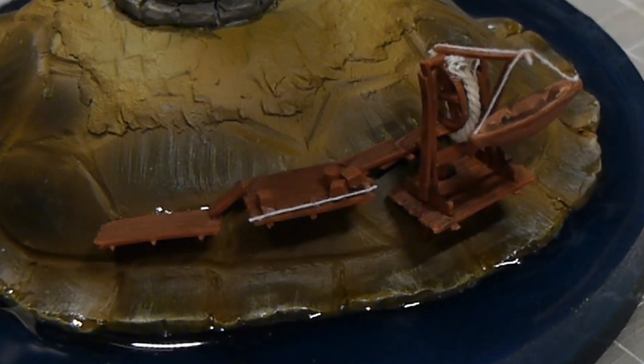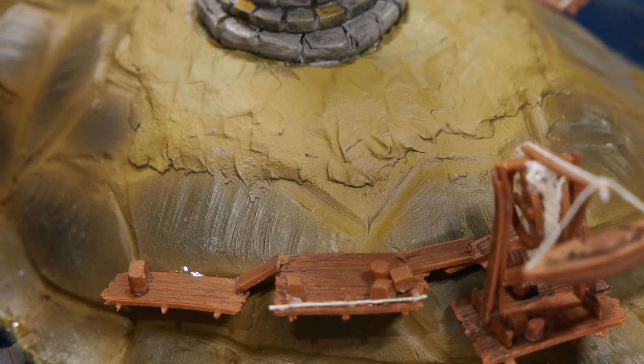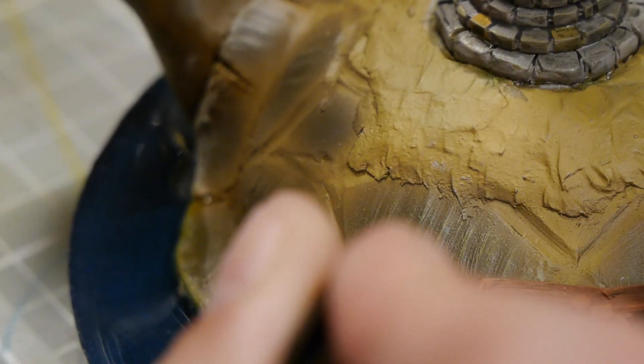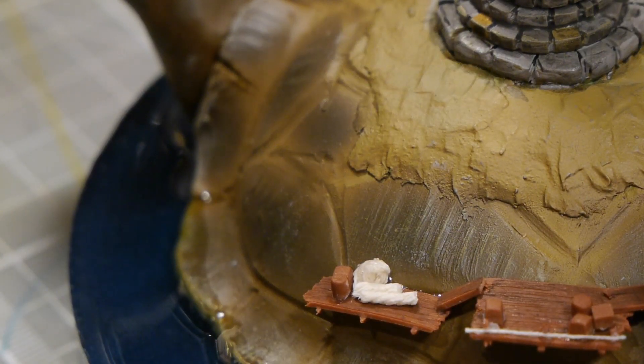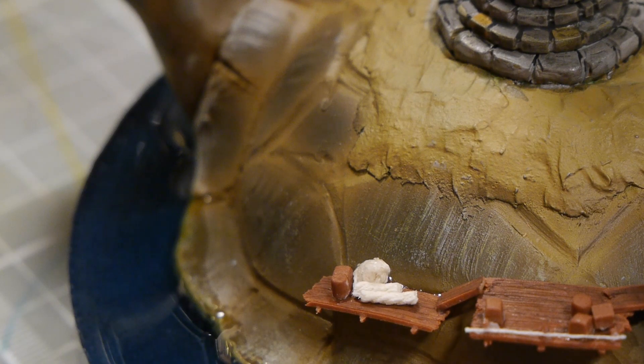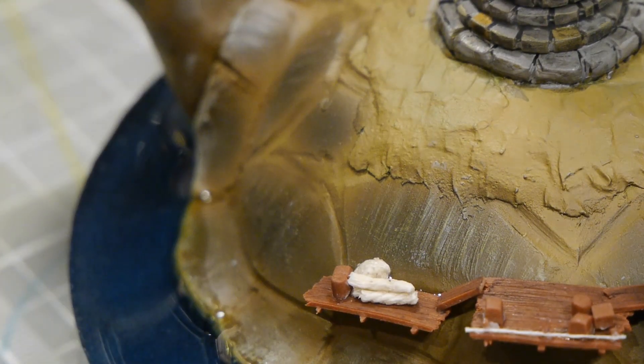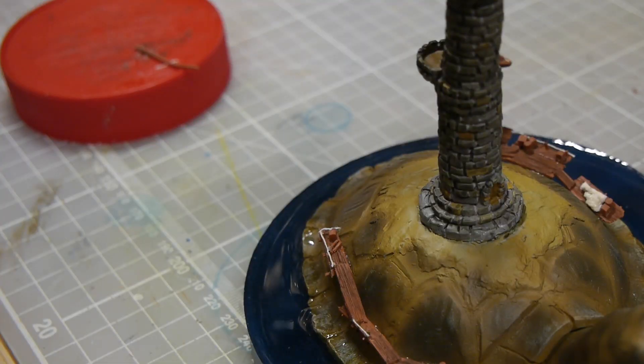The last step as far as the scaffolding was concerned was to add in little barrels and chests and crates and then I made a little bit of rope just taking my twine and winding it with a little bit of super glue. This gave it a bit of rigidity and made it look like stacked rope that was either waiting to be used or had been set aside for some other purpose.